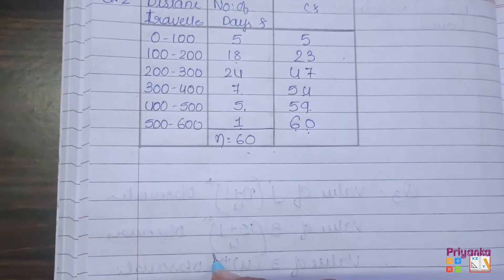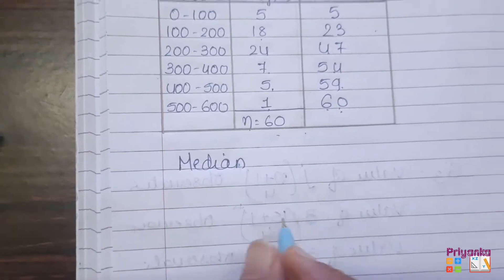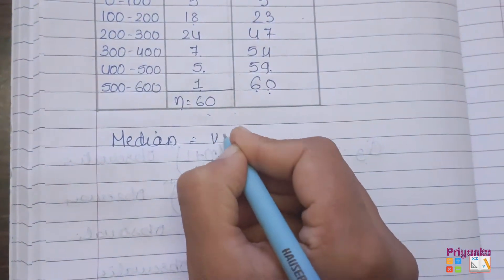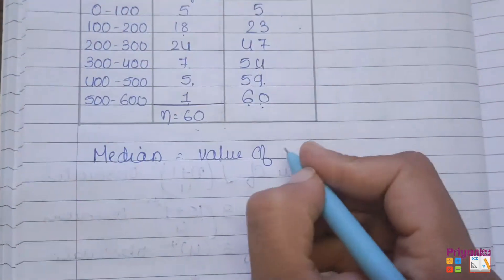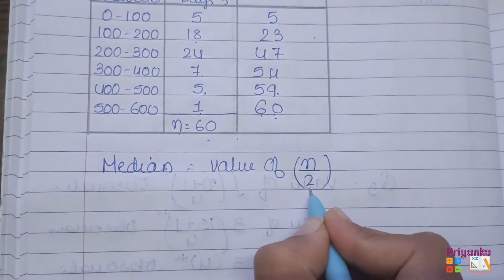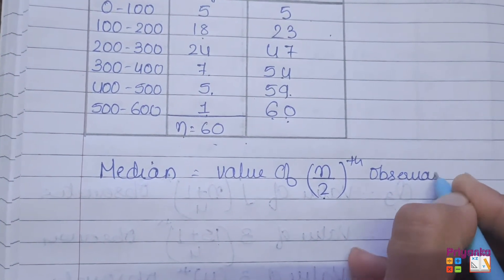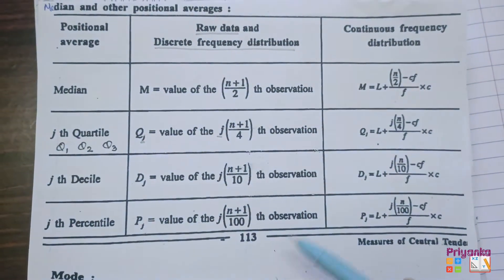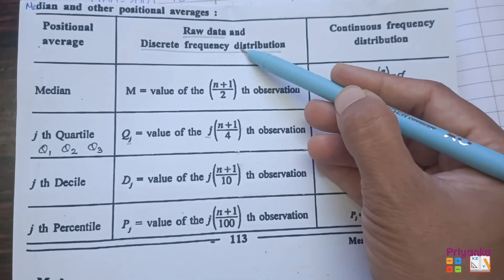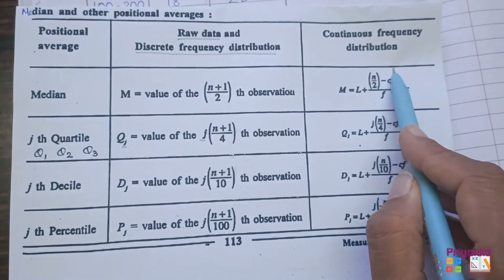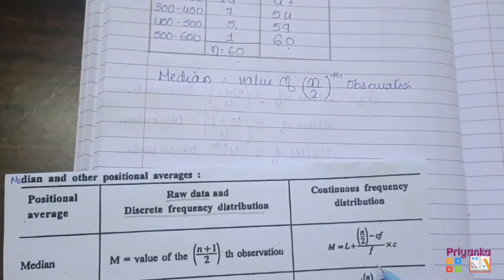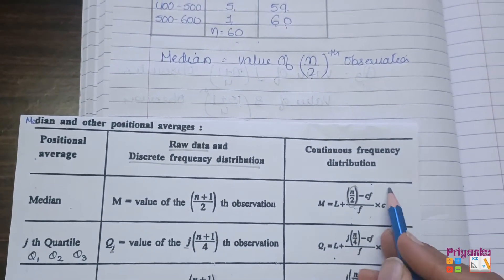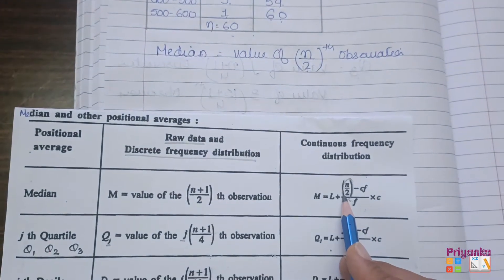Next, they ask us to find the median. For continuous frequency distribution, we first find the value of n/2. Before using the big formula, let me introduce it — for raw data or discrete frequency distribution, one formula is used, and for continuous frequency distribution, another formula is used. The first step is always to find n/2.